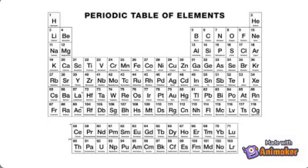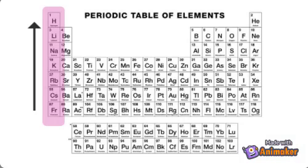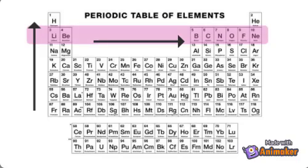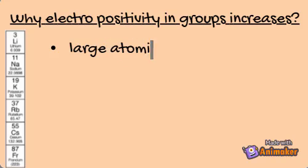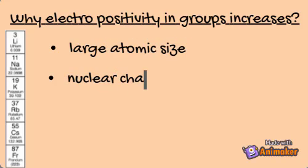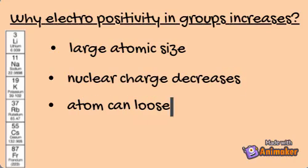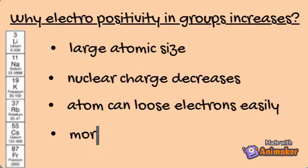Electropositivity increases down a group and decreases in periods. Why does Electropositivity increase in groups? It is because when the size of the atom increases in groups, the hold of the nucleus over valence electrons decreases. The atom can lose electrons more easily, thus its Electropositivity increases.